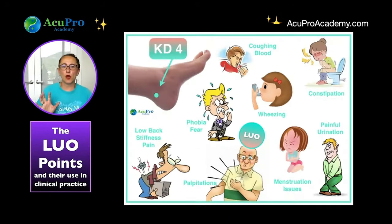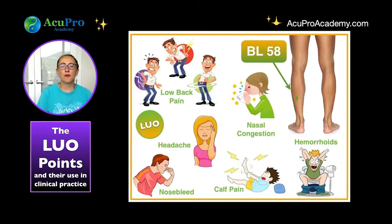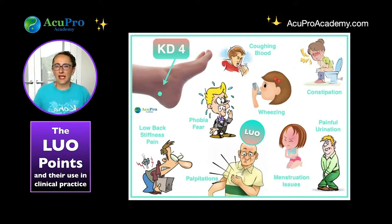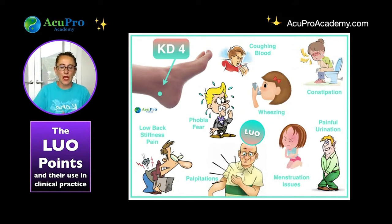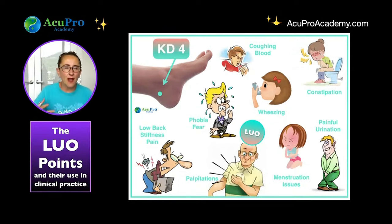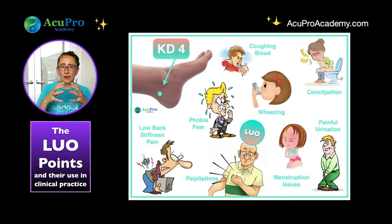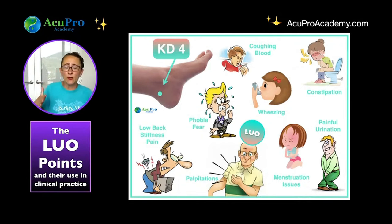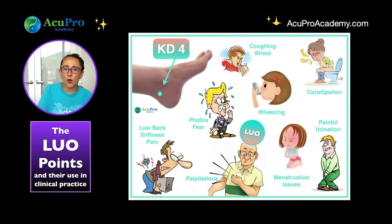Now KD4 and BL58. The kidney and bladder reinforce each other, specifically for eliminating water and diuretic effects. KD4 and BL58 together are very useful when there is kidney stone pain. They won't get rid of the stones — you still have to pass those — but they work well together for managing the radiating pain from kidney stones.